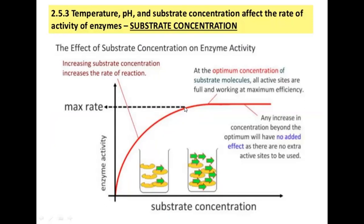At the optimum concentration level, all active sites are fully occupied and working at maximum efficiency. If more substrate is added beyond this point, the reaction rate does not increase further — the enzyme-substrate complex reaches a plateau. Any increase in concentration beyond the optimum level shows the line going straight, meaning there are no additional free active sites in the enzyme.